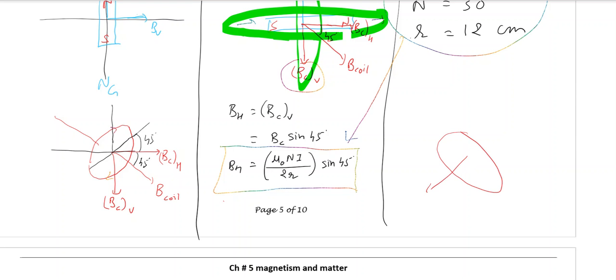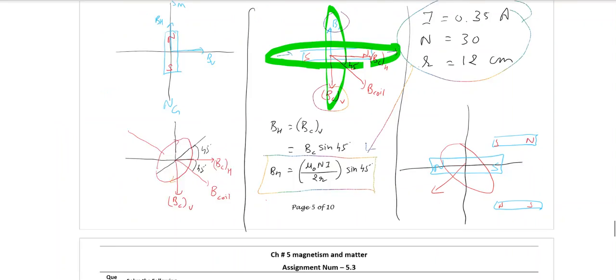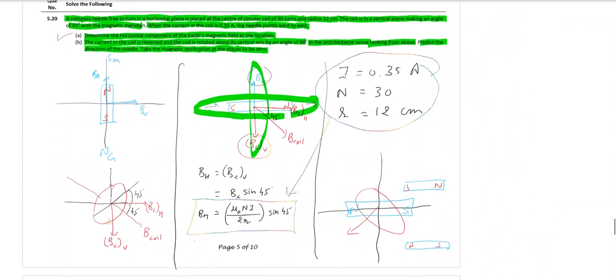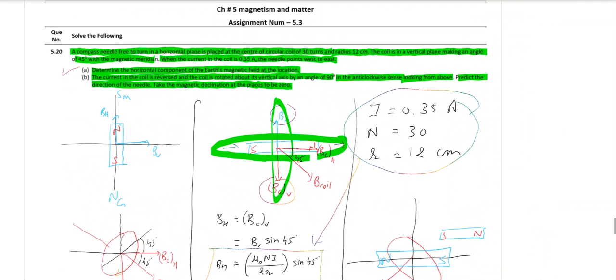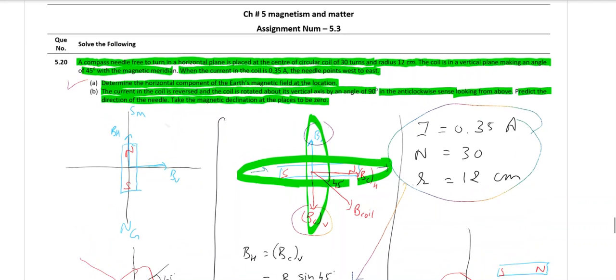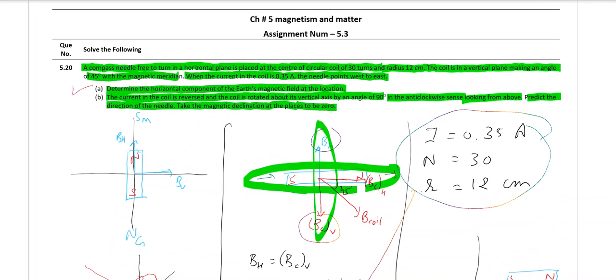Now what will happen? The magnet which was setting itself earlier like this, with north here and south here, will now turn in the opposite direction. So the new situation of the magnet will be like this where you have north here and south here. So that is all the difference which is experienced by the magnet if you rotate the coil by 90 degrees and if you reverse the direction of current.